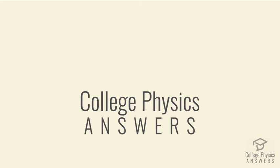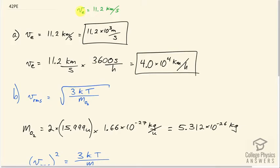This is College Physics Answers with Sean Ditchko. The escape velocity from Earth is 11.2 kilometers per second, and Part A asks us to express that speed in meters per second and kilometers per hour.